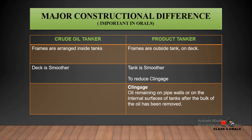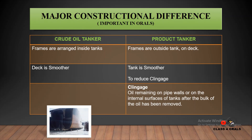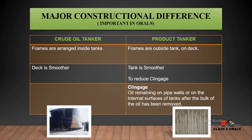This means the crude oil tanker's tank interior is smoother, and in the product tanker the frames are outside — this is basically done to reduce clingage. Clingage means the oil remaining on the pipe walls or on the internal surfaces of the tank after the bulk of the oil has been removed. You can see here the tanks have frames inside in the crude oil tanker, and clingage on the walls after discharging.